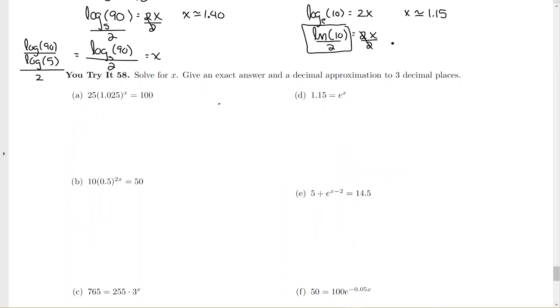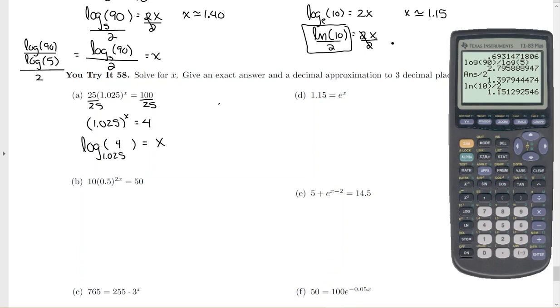So again, more of the same type of question. Hooked by multiplication, unhooked by division. So I have 1.025 to the x equals 4. Log base 1.025. And remember, logarithms always equal the power. So my x is the power. There's your exact. And then again, for your decimal approximation, log 4 divided by log 1.025. So I get about 56.14. Now this one went into three decimal places, so 142.